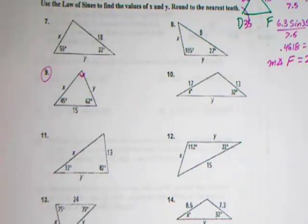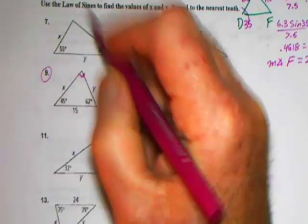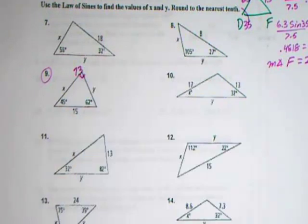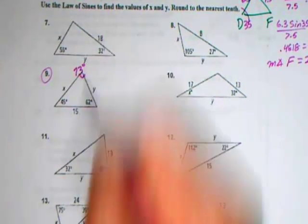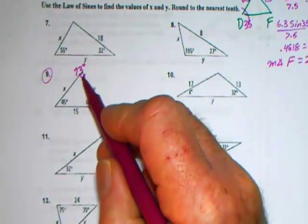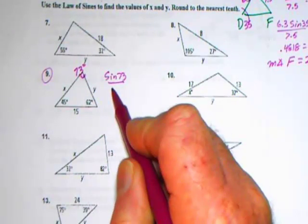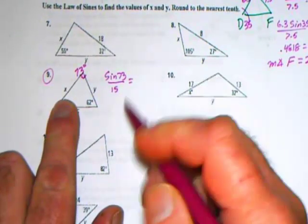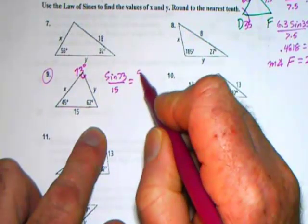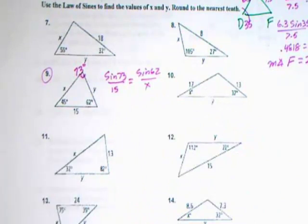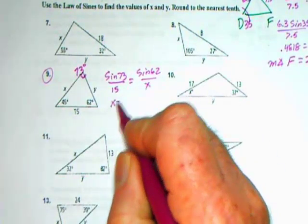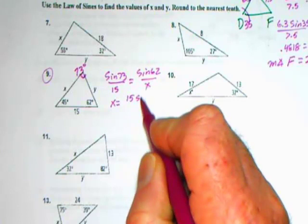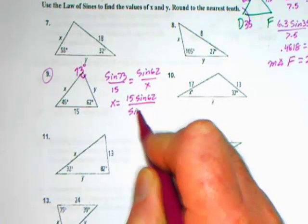They are giving us enough information to find that angle because by triangle sums, all of these angles have to add up to 180 degrees. So if I add 45 and 62, I get 107. 107 from 180 gives me 73. So this angle is 73 degrees at the top of the triangle. Now I've got enough to set up the law of sines. I can say sine 73 over 15 is equal to sine of 62 over x, and we're going to cross multiply and solve for x.